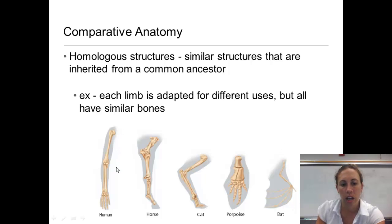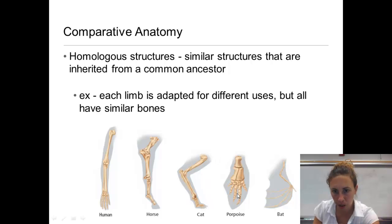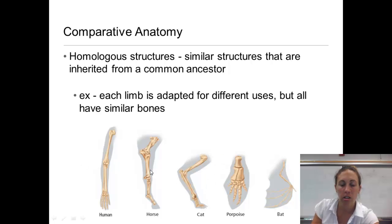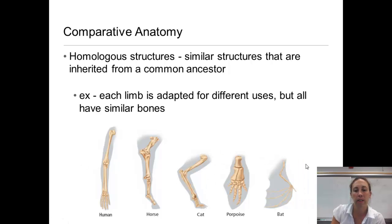Each of these appendages has three major parts of the bone, and you can see the similarities between all of them even though they're from different species.